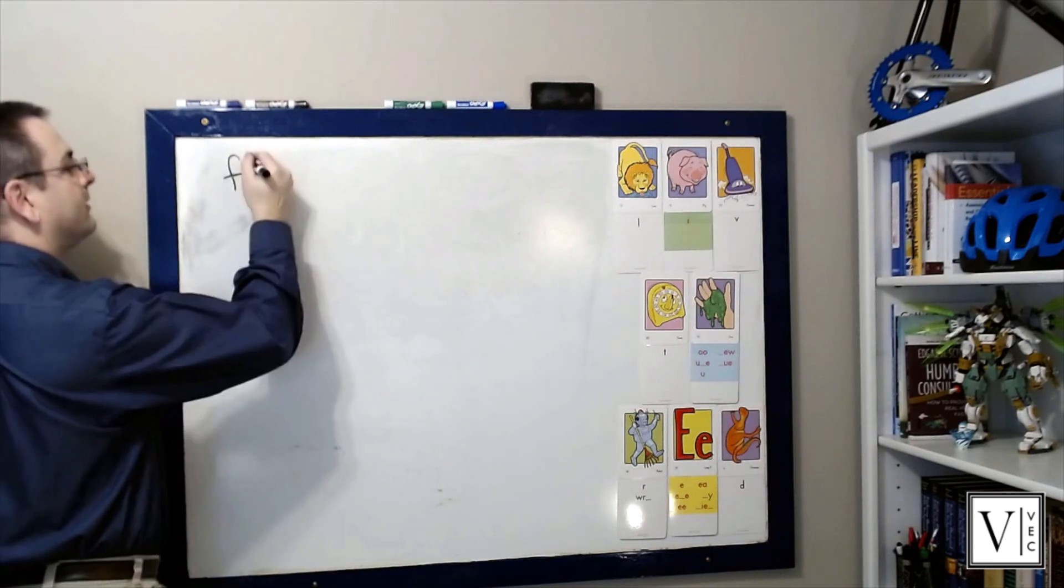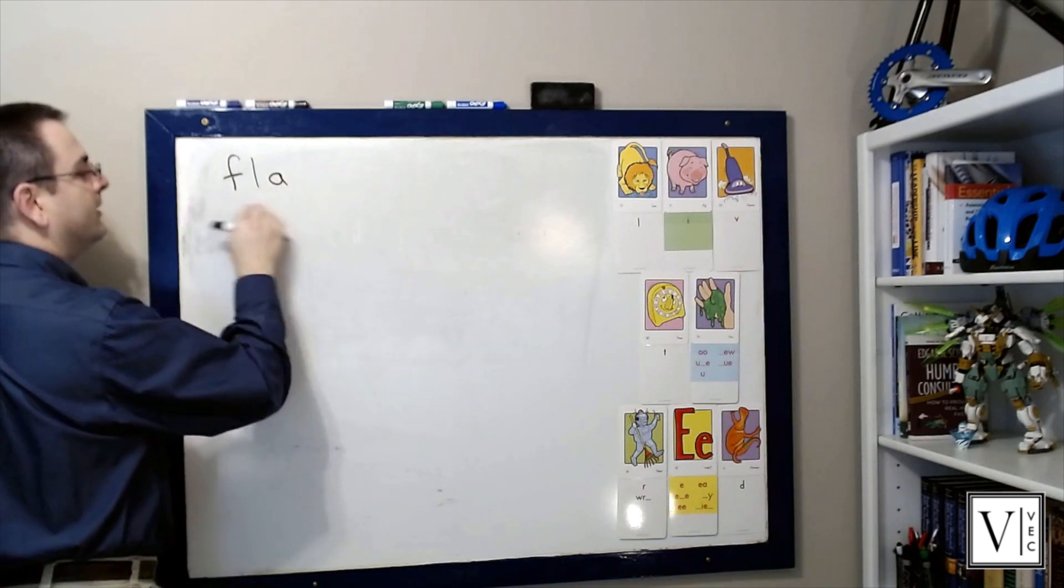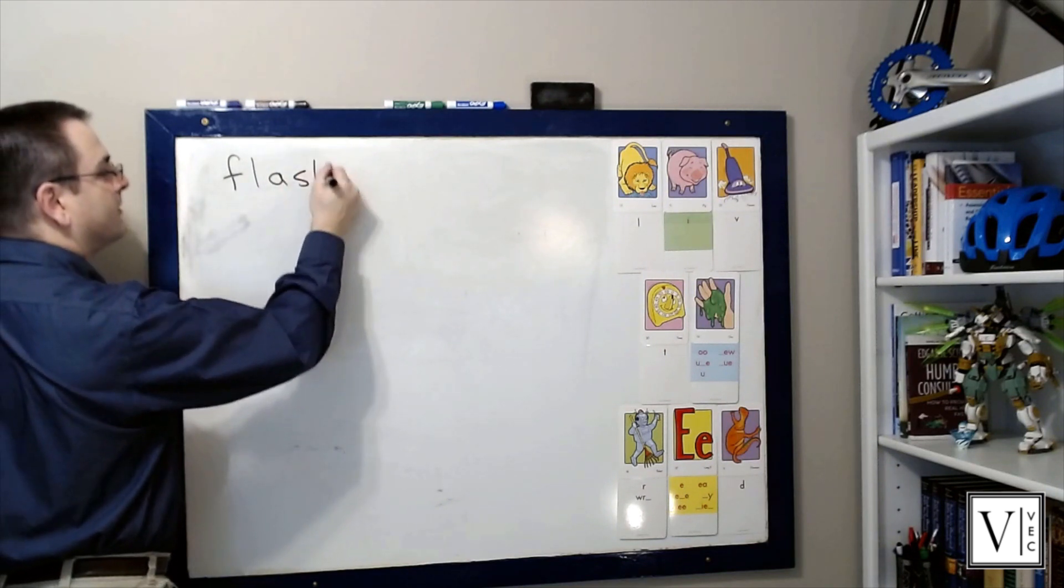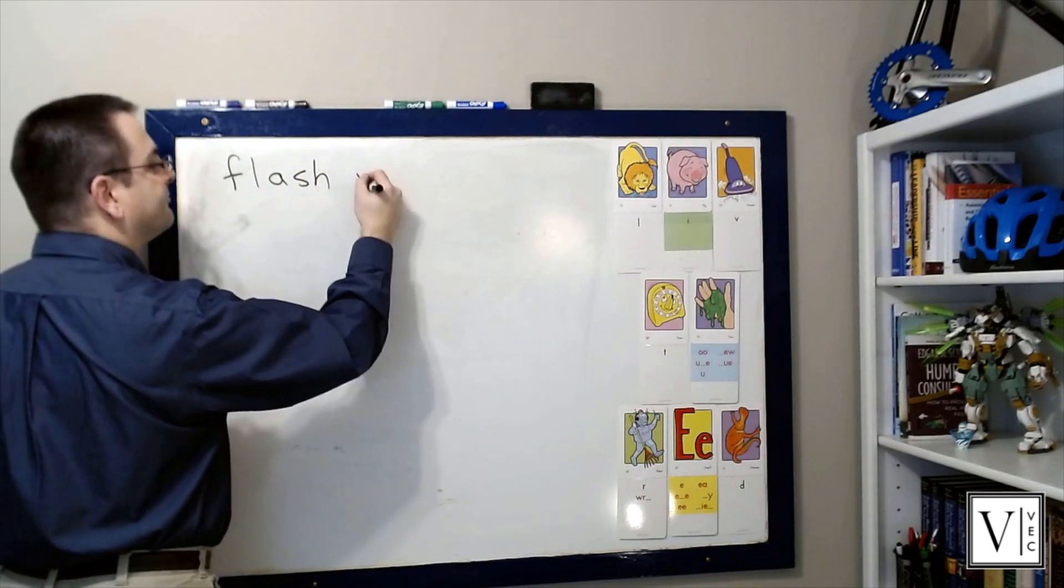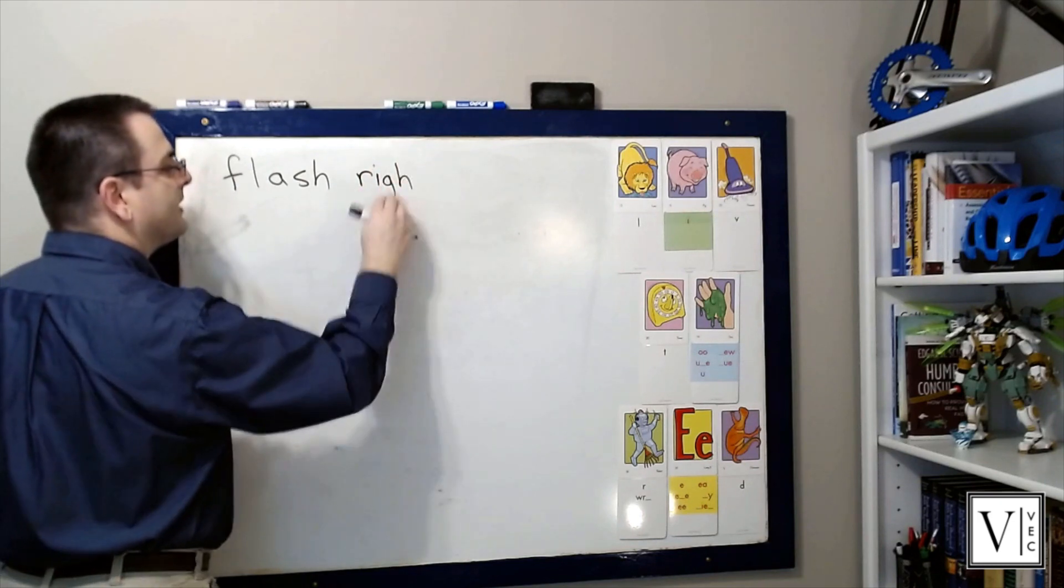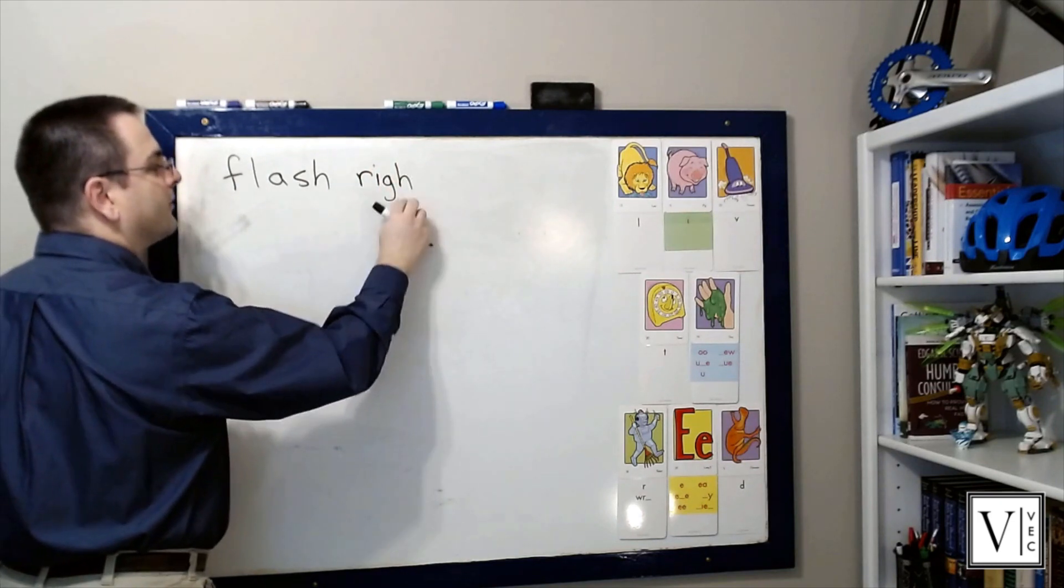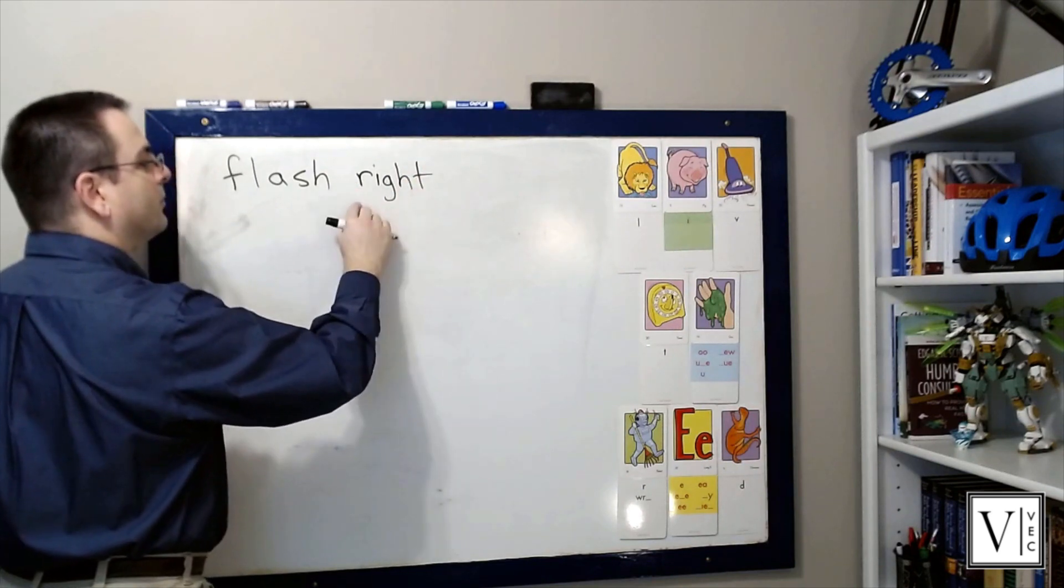Sound? L. Sound? A. Blend? Fla. Sound? Sh. Blend? Flash. Word? Flash. Sound? R. Sound? I. Blend? Rye. Sound? T. Blend? Rite. Word? Rite.